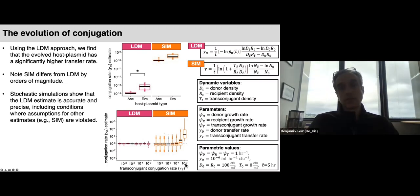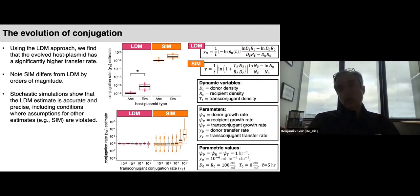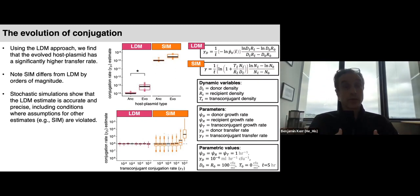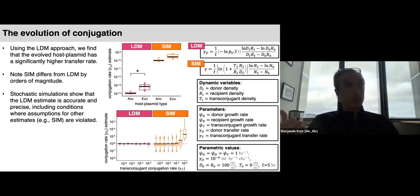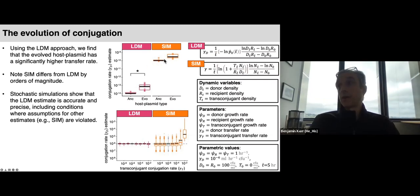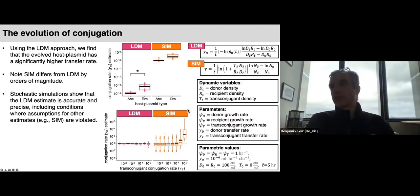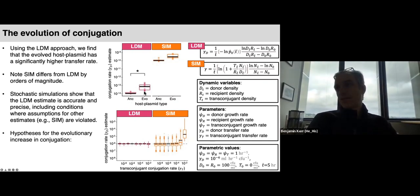For many plasmid systems this discrepancy naturally occurs due to a phenomenon called transitory de-repression: when a plasmid enters a new recipient, the genes encoding the conjugation apparatus become de-repressed and are expressed at higher rates. This means transconjugants exhibit much higher transfer rates than established donors, inflating the Sim estimate. This explains the bias we observed, and there's more to the story if people are interested.